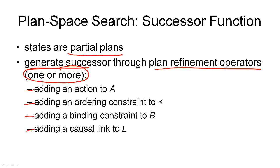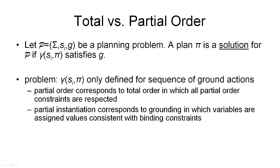What remains to be defined for our plan space search problem is the goal test. But before we define the goal test, we need to reconsider what we understand by a solution for a given planning problem. A planning problem is defined by a state transition system, an initial state, and a goal condition. A plan pi is considered a solution if the application of the plan in the initial state gives us a new state that satisfies our goal.